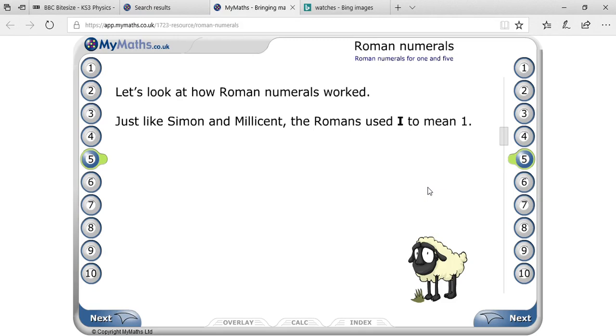Here I'm going to explain Roman numerals for 1 and 5. Let's look at how Roman numerals worked. Just like Simon and Millicent, the Romans used I to mean one. I to mean one.